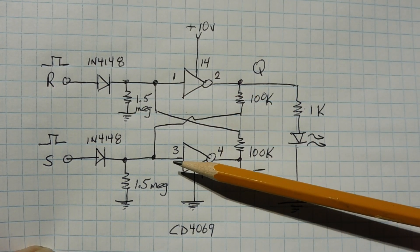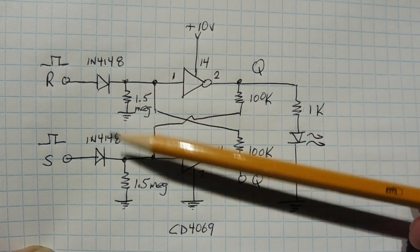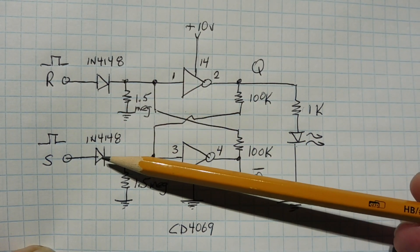Now the two inputs to the SR flip-flop have weak pull-down resistors and I have two isolation diodes on the reset and set line.